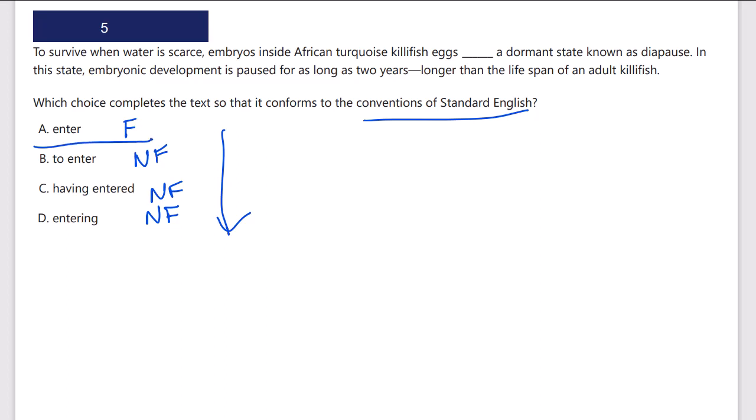Let's take a look: 'To survive when water is scarce, embryos inside African turquoise killfish eggs enter a dormant state.' Yes, that's exactly right. It would not be 'killfish eggs to enter' or 'having entered.' This needs to be the main verb, and that has to be a finite option. So immediately we come in, just like our number and a few other samples where we saw that standout option—it's usually the one that's correct.